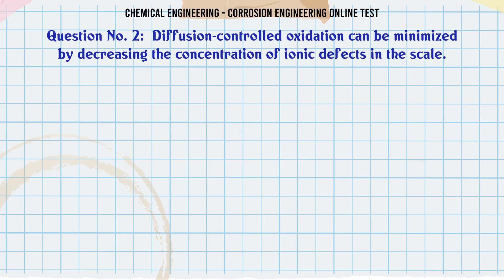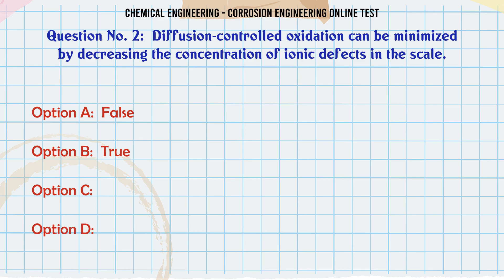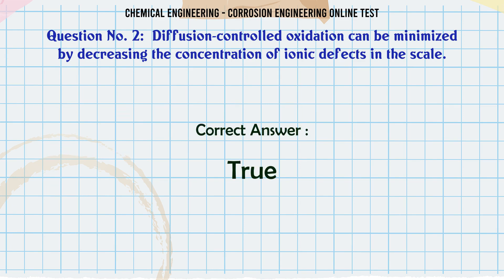Diffusion-controlled oxidation can be minimized by decreasing the concentration of ionic defects in the scale. A. False. B. True. The correct answer is: True.